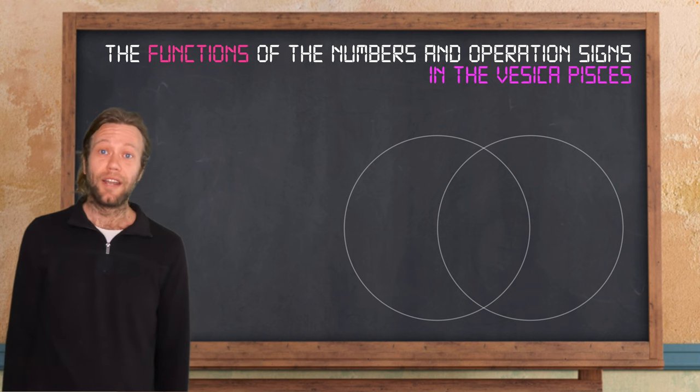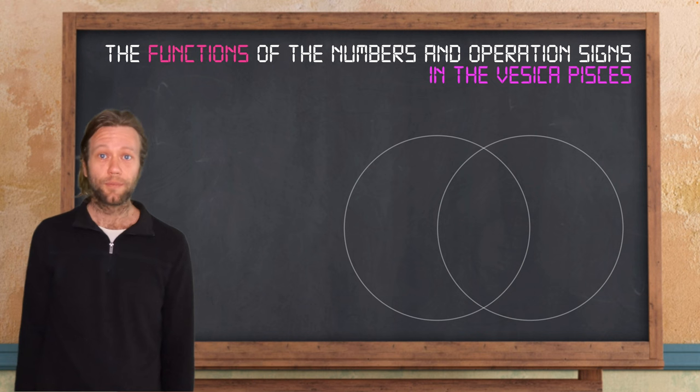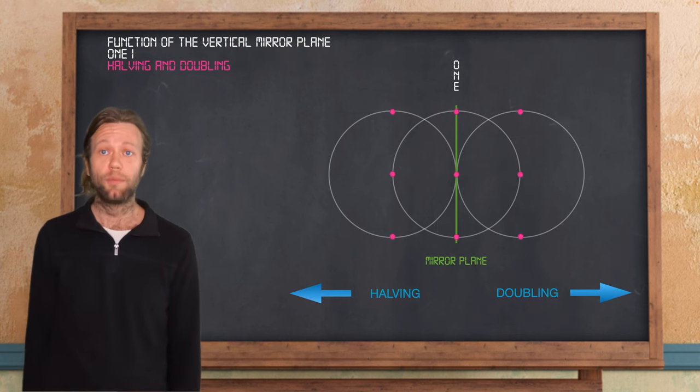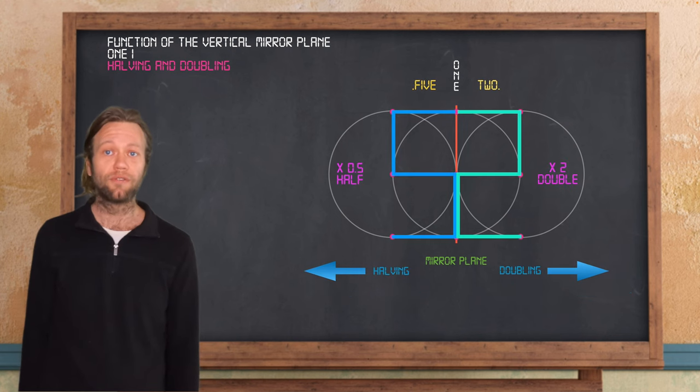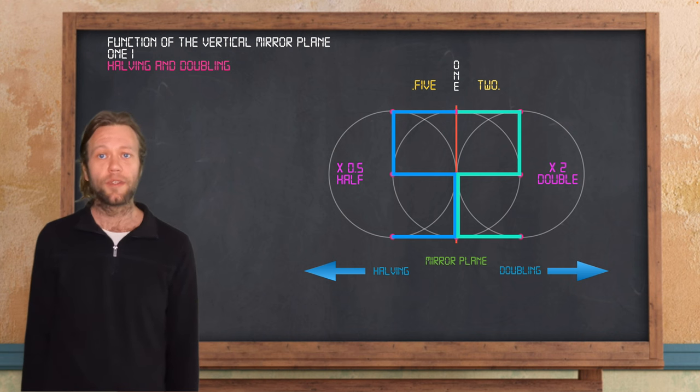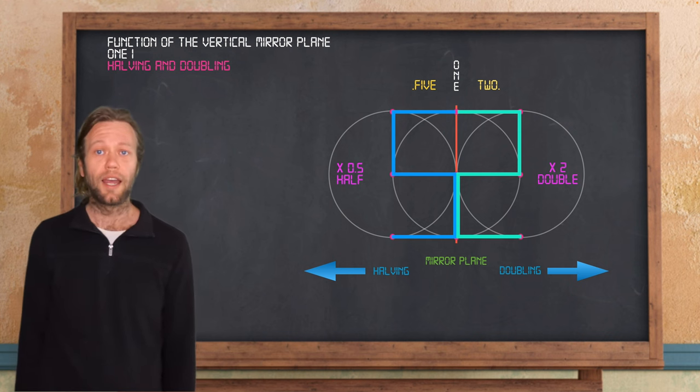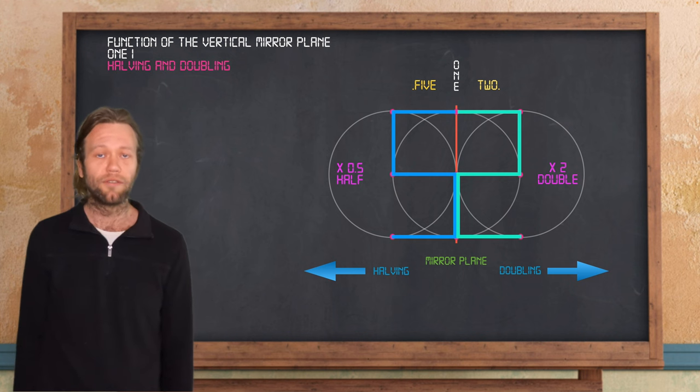All right, now we can see what all of these forms can do for us. So we'll explore the related functions for each of the symbols we've discovered in the Vesica Pisces in turn. First we have the vertical mirror plane of the 1 which we discussed earlier. If we draw our digital 5 and 2 on either side of the mirror plane we'll see that in form they're simply the inverse of each other. Similarly their functions are also inverse to each other. The 2 here represents doubling and the 5 on the other side of the mirror plane of 1 represents 0.5, halving.